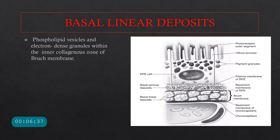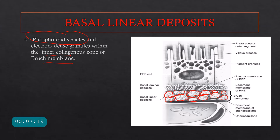The basal linear deposit refers to lipid deposition and electron-dense granules deposited within the inner collagenous zone of Bruch's membrane. These deposits are very important in the pathogenesis of AMD, because the changes occurring at the level of the RPE and the inner zone of Bruch's membrane are what ultimately lead to drusen formation and AMD.